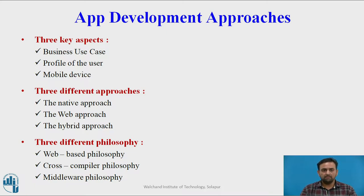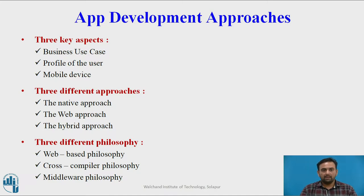Now we will see the different approaches. First one is the native approach, in which the native app is created on the native platform using the platform API. Second is the web approach. In this, the mobile application is not installed on the mobile device — it is rendered in the mobile browser on the network. Languages such as HTML, CSS, and JavaScript are used to build these apps.